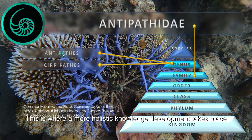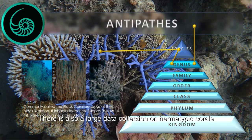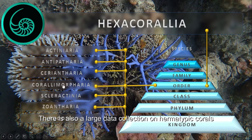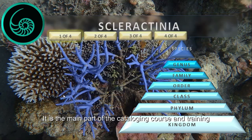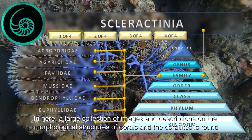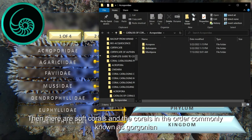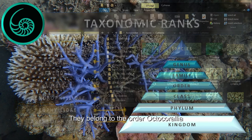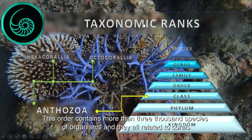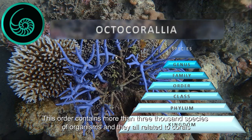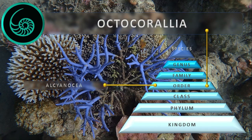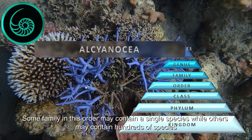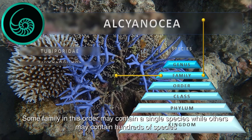This is where a more holistic knowledge development takes place. There is also a large data collection on hermatypic corals, which is the main part of the cataloging course and training. A large collection of images and descriptions on the morphological structures of corals and the corallites is found here. There are also soft corals and corals in the order commonly known as Gorgonian — belonging to the order Octocoralea. This order contains more than 3,000 species of organisms, all related to corals. Some families in this order may contain a single species while others may contain hundreds.